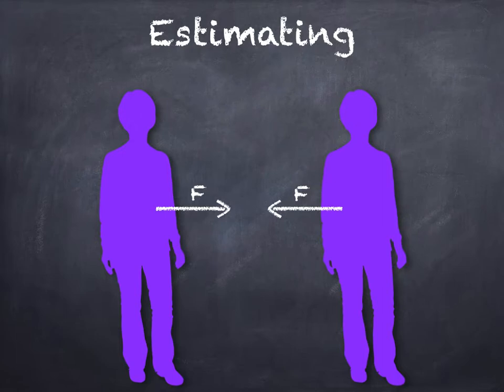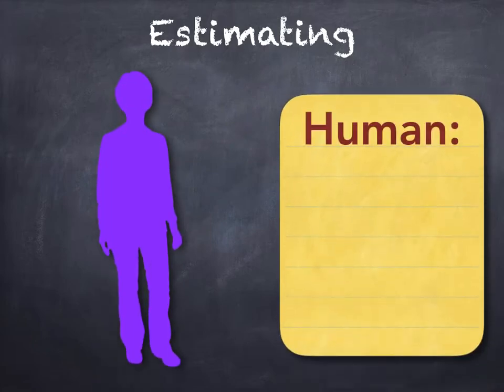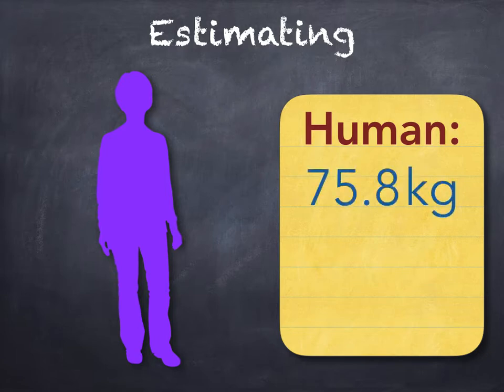So if you had to answer that question, what do you think would be a realistic mass of a pupil? Remember, this would have to be in kilograms. Well, supposedly the average mass of an adult in Europe is 75.8 kilograms. Obviously I wouldn't expect you to get that exact value, but it would need to be in what's called the correct order of magnitude. So you'd lose marks if you used an estimate of 7 or 700 kilograms.